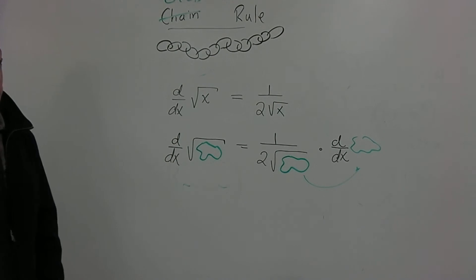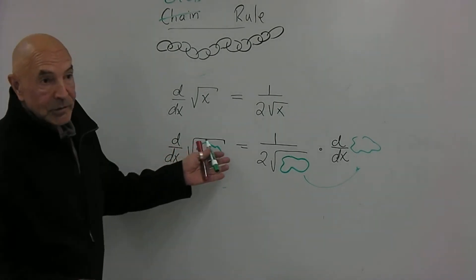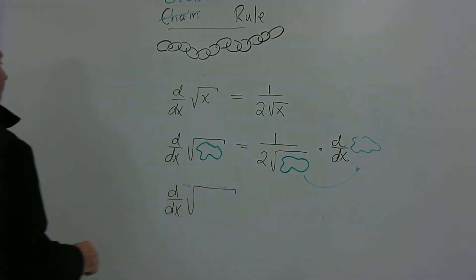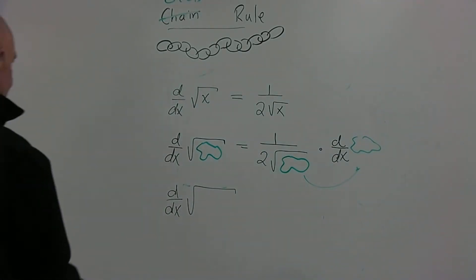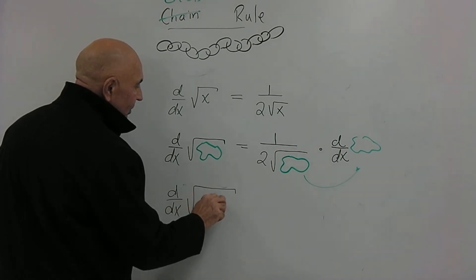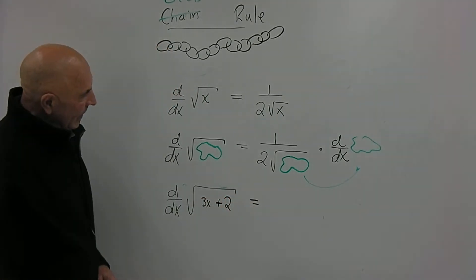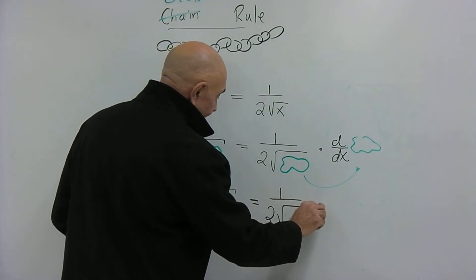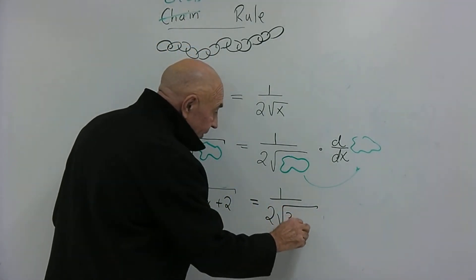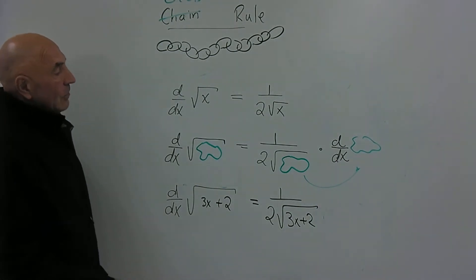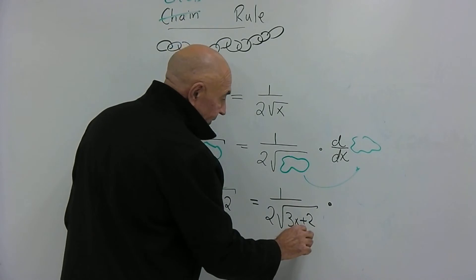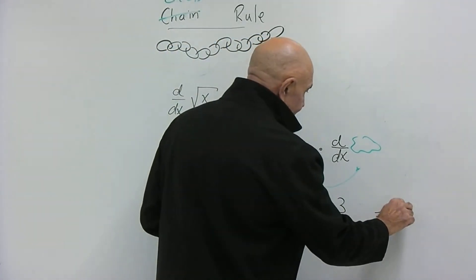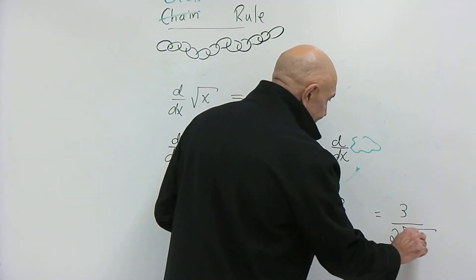Let's do an example by filling in the blob. Take the derivative of the square root of (3x plus 2). It's one over twice the square root of that blob — the original (3x plus 2), not yet differentiated — then multiply by the derivative of the inside, which is 3. So the answer compresses to 3 over twice the square root of (3x plus 2). That wasn't so bad!